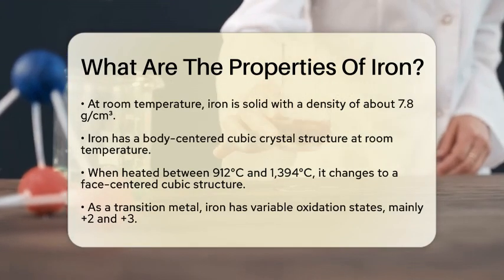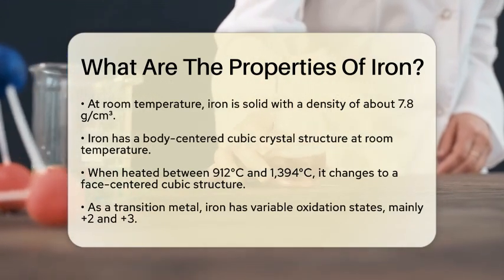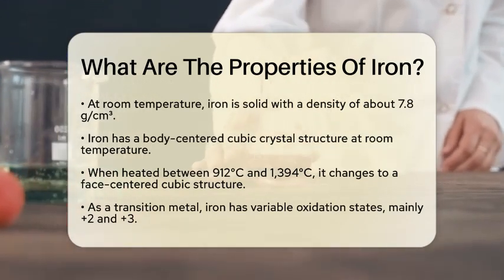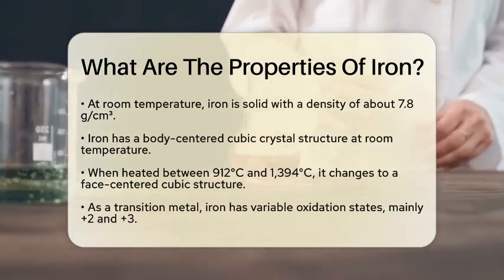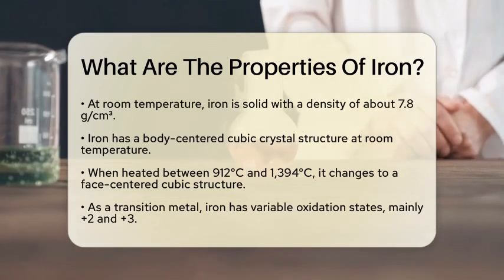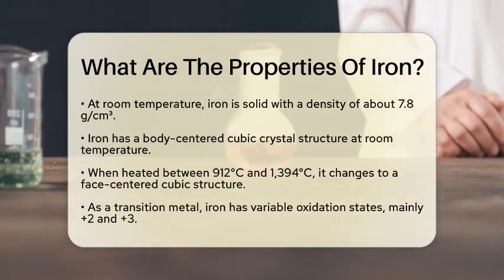Now let's discuss the chemical properties of iron. As a transition metal, iron has variable oxidation states, commonly ranging from plus 2 to plus 3.